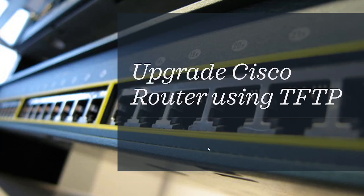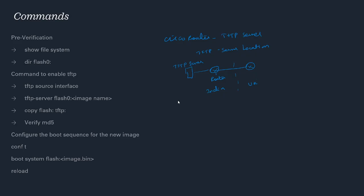Welcome to this video explaining how to upgrade a Cisco router using a TFTP server. Consider a scenario where you have 100 plus routers in your customer or managed services network, and you're given a task to upgrade all of them. The TFTP server is located in India, with about 50 local routers and 100 plus routers globally.